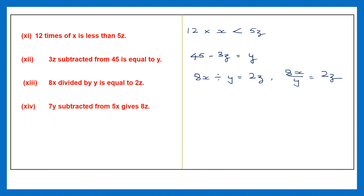Question 14: 7y subtracted from 5x. Again, note the word 'from' — from 5x — that means you need to write 5x first. Whatever comes after the word 'from' in subtraction should be written first. 'Gives' means equal to. So 5x minus 7y equals 8z.